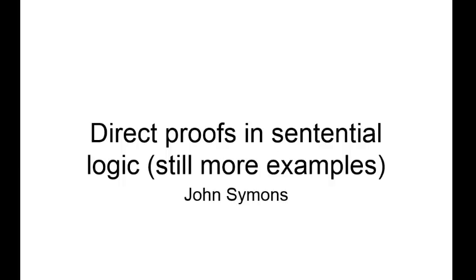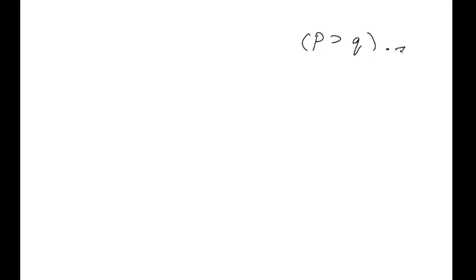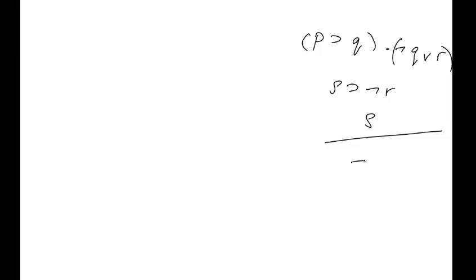We'll tolerate my bad handwriting for a few more videos as we go through more direct proofs in sentential logic — still more examples. So our premises are: (p→q), (¬q ∨ r), (s→¬r), and s. What we're trying to prove is ¬p — just a simple one to get started with.